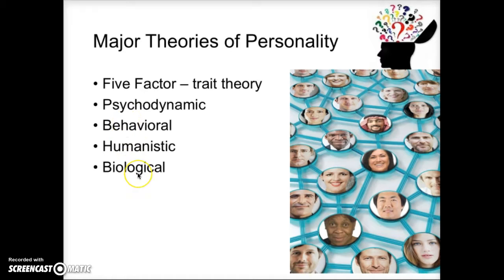Those four theories are all related to how we got the personality we have, where it came from, and how changeable it is. The other major theory of personality is the five-factor or trait theory, which looks at personality from a completely different perspective. If you remember from the research chapter, one of the first goals of science is simply to measure and describe — and the five-factor trait theory is all about measuring and describing personality.